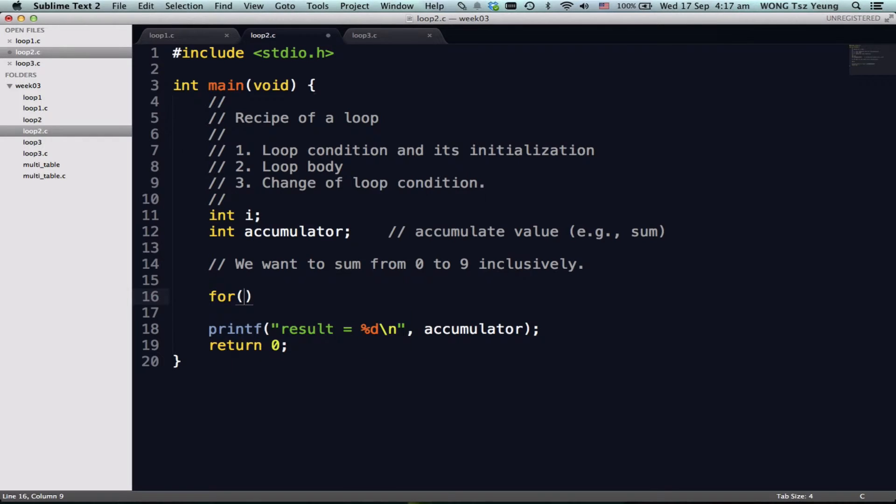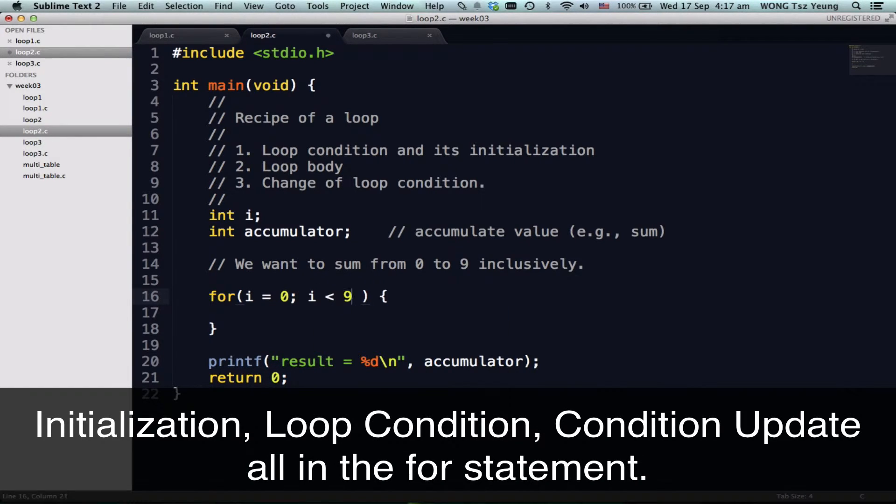So let's write the for loop first. The first guy is the initialization. Then we will have the loop condition. These two together say that I will loop from, oh I missed one thing. This together means that I will loop from 0 and then loop up to 9. But of course, while I'm looping, I don't care about it first. While we are looping,